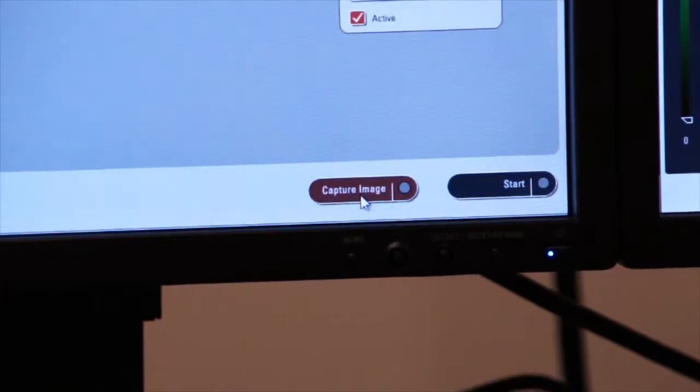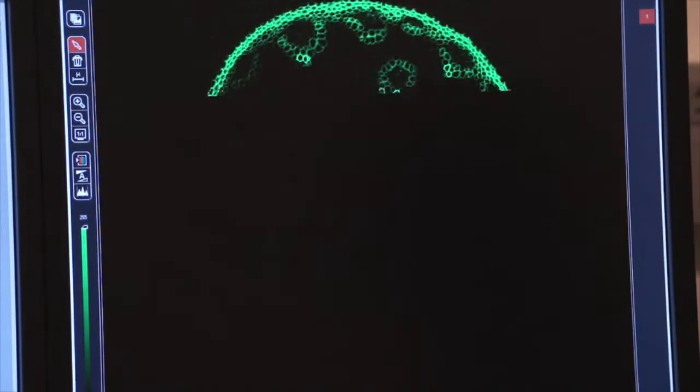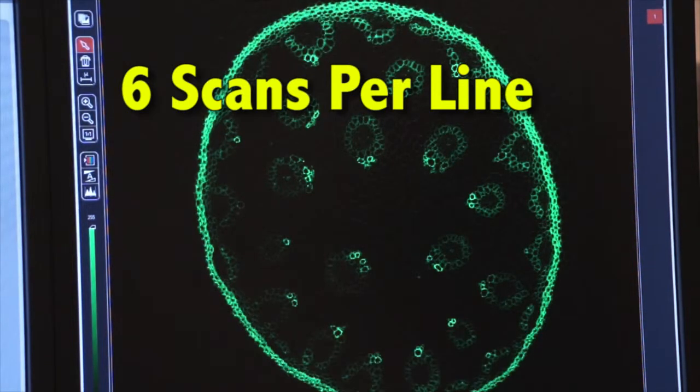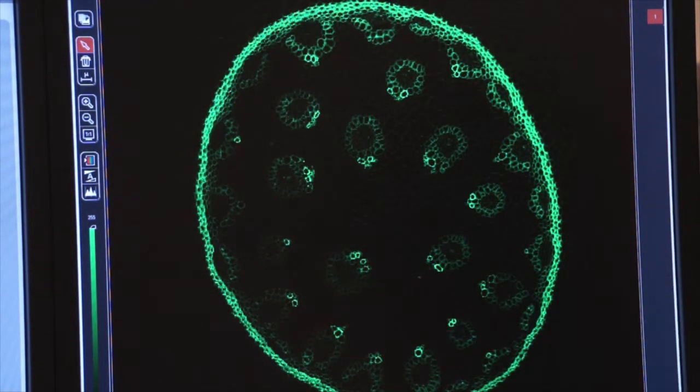So if I click on capture image now, I'm telling the system to gather an image and it's going to take six scans per line. Now you can see that was a little slower than capturing an image with one scan per line. So let's switch back to one.